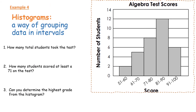The next type of graph is a histogram — a way of grouping data into intervals. At the bottom we have intervals such as 51–60, 61–70, and so forth. Before answering questions about the algebra test scores, I like to note the amount above each bar: two, five, eight, and twelve, and six.